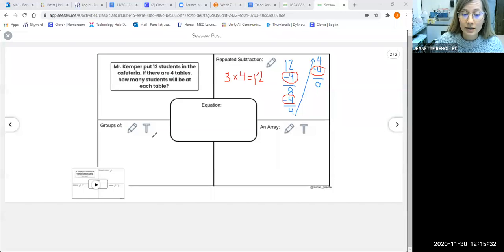Now I can show a model using groups. Our word problem says there are four tables, so I can show one, two, three, four tables. If Mr. Kemper has 12 students all together, I can put one at each table and count up to 12: one, two, three, four, five, six, seven, eight, nine, ten, eleven, and twelve. If there are 12 students and they're shared equally into four tables, that means there are three students at each table. That's the same answer we got up here when we subtracted repeatedly.